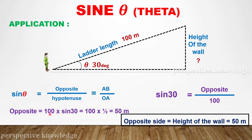So the opposite side is equal to 100 multiplied by sin 30. Sin 30 degrees is 1/2. Substituting: 100 into 1/2 equals 50 meters. So the height of the wall is 50 meters, calculated using sin theta.